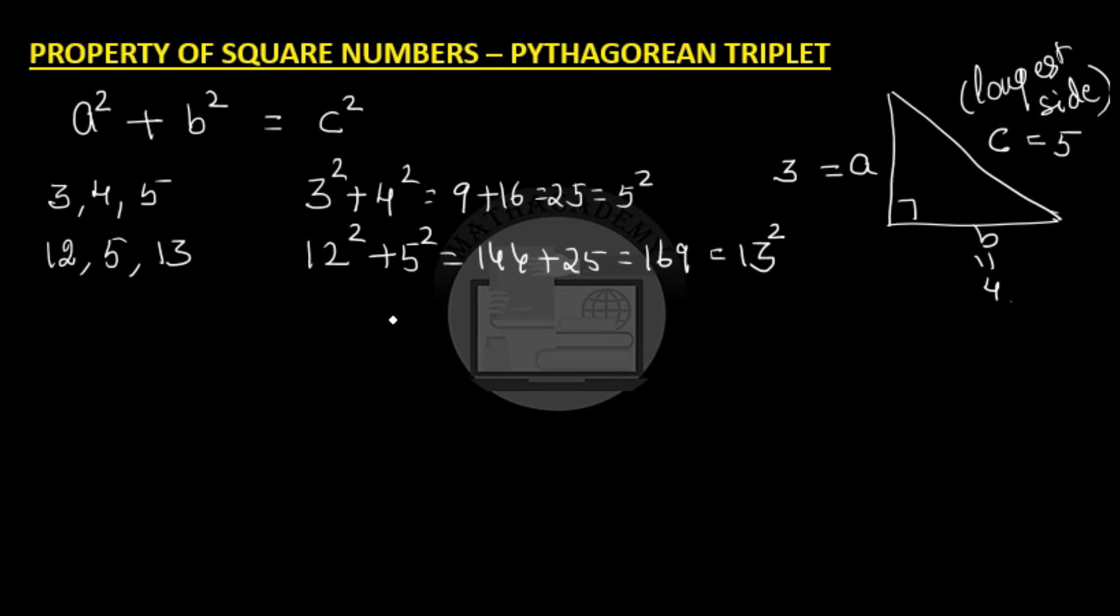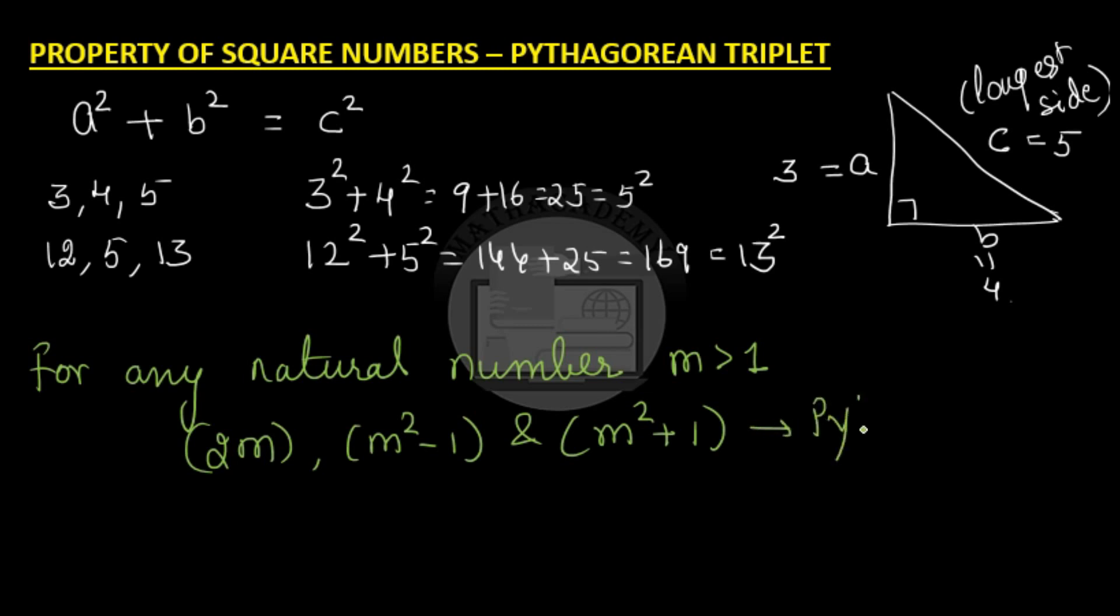But now what if we have to find more such Pythagorean triplets like this? So we will use the property of square numbers. The property says that for any natural number m, and m has to be greater than 1, the property says that 2m, m² - 1 and m² + 1, these three together form a Pythagorean triplet.